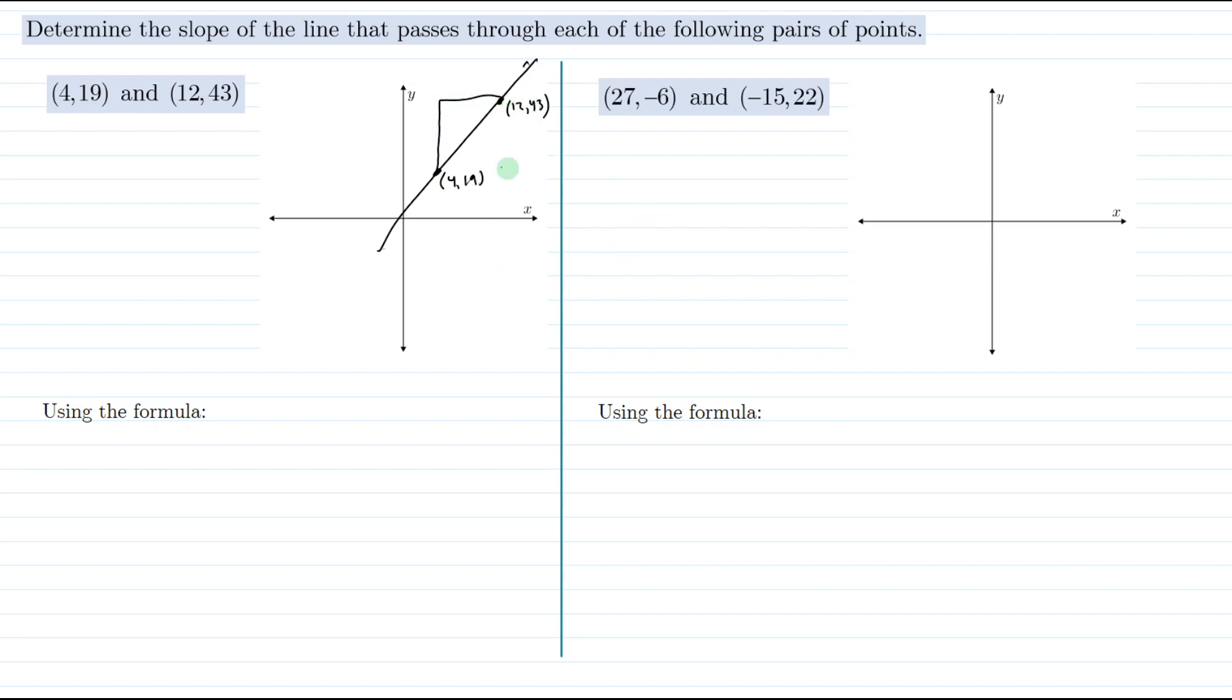Well we went up from 19, which is the y value, to 43, and sometimes it helps if you just mark that on the y-axis. So we went from a y value of 19 up to a y value of 43. So how much is that? Well we could just do 43 minus 19 and that gives us 24. So the rise is 24.